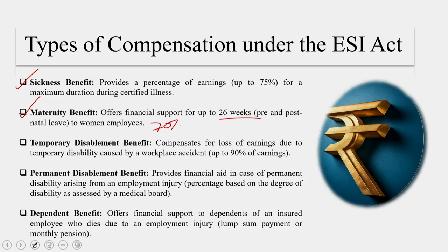The third important aspect is the temporary disablement benefit. In the unfortunate event of a temporary work-related disability, this benefit provides financial assistance to the affected employee, helping partially replace lost income and maintain some level of financial security during recovery. To be eligible, the disability must be caused by a work-related accident or occupational disease. The temporary disablement benefit is typically calculated as a percentage of the employee's daily wages. The permanent disablement benefit provides financial aid for permanent disability arising from employment injury, with the percentage based on the degree of disability as assessed by a medical board.